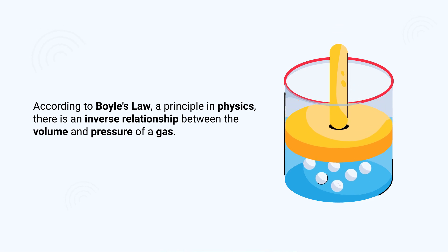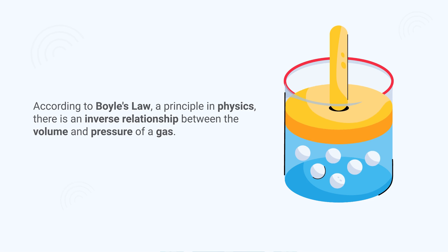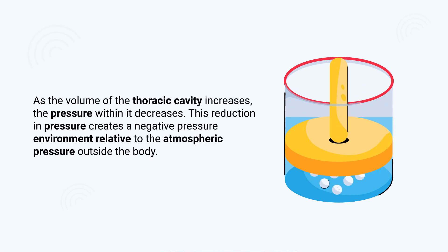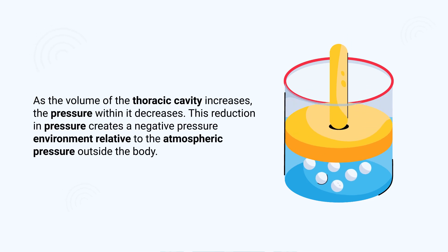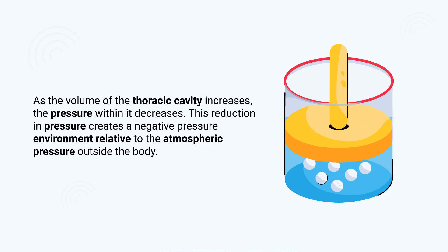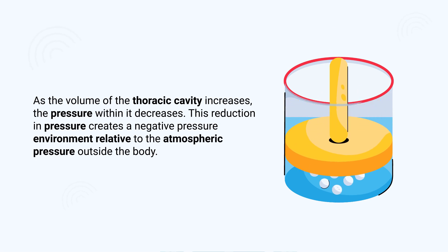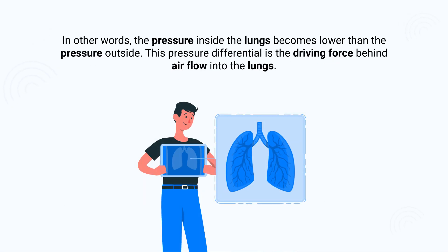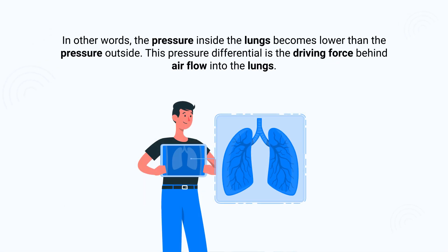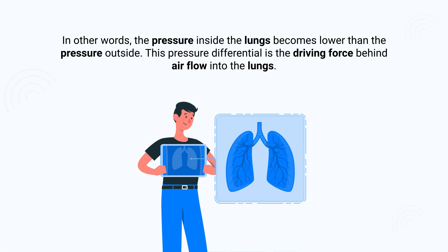According to Boyle's Law, a principle in physics, there is an inverse relationship between the volume and pressure of a gas. As the volume of the thoracic cavity increases, the pressure within it decreases. This reduction in pressure creates a negative pressure environment relative to the atmospheric pressure outside the body.